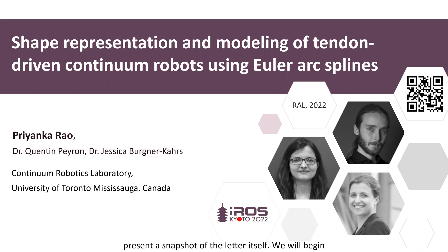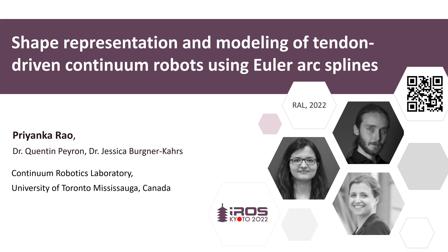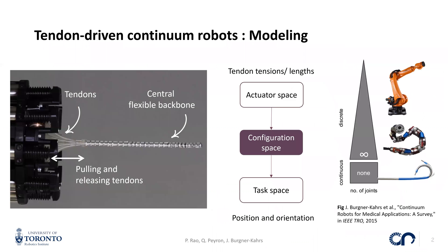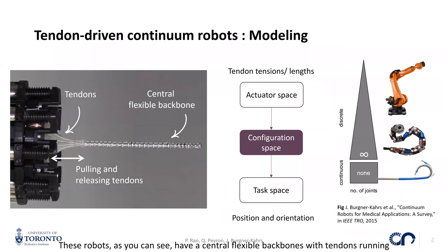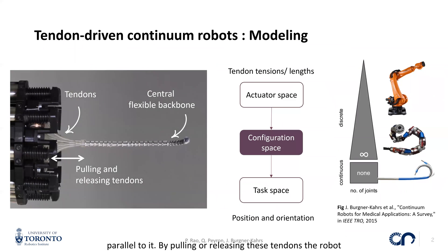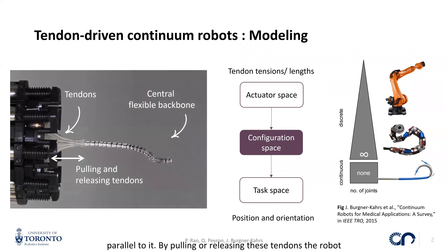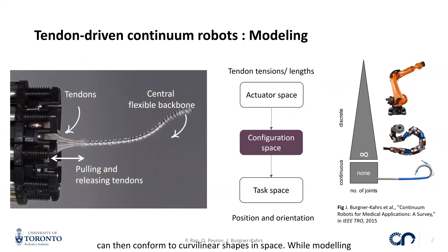We will begin deconstructing the title by introducing tendon-driven continuum robots. These robots, as you can see, have a central flexible backbone with tendons running parallel to it. By pulling or releasing these tendons, the robot can then conform to curvilinear shapes in space.